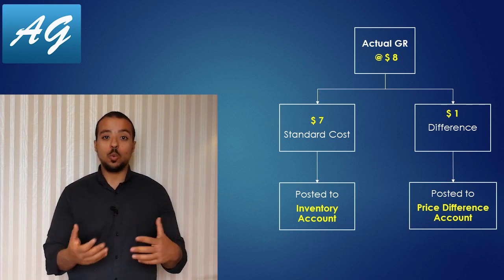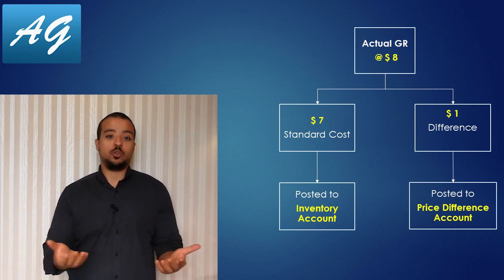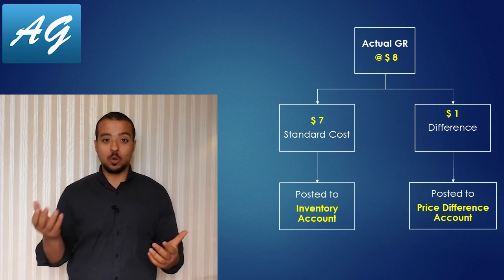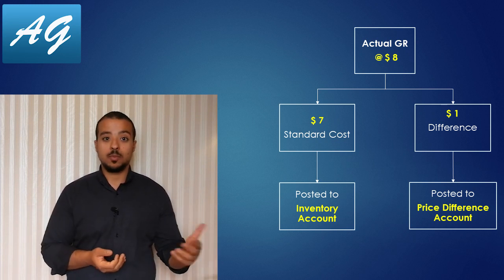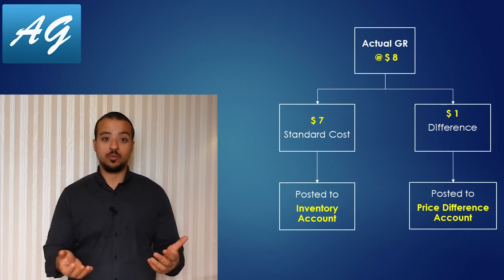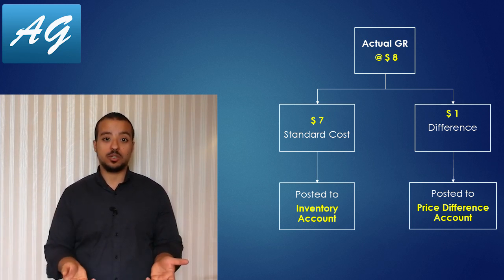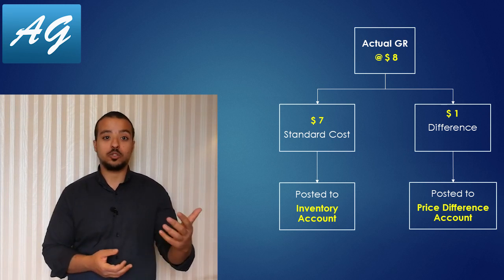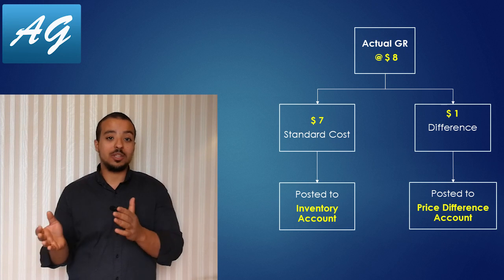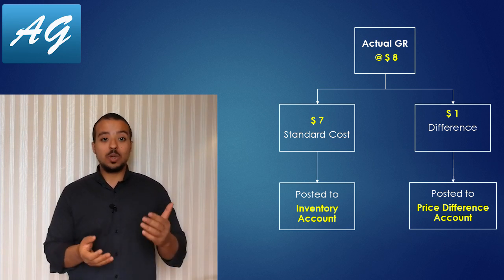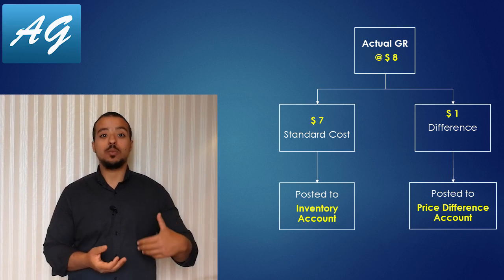We can know why we had to pay more or less for this product. For example, our plan was that the cost of the chair was 7 USD, but actually the supplier was more expensive. Or maybe the transportation to move the products from the supplier to our warehouse was more expensive, or maybe we had to pay more customs or duties or any other expense to make the chair ready to be sold. This way you can easily analyze why we have differences, and this will help you improve your performance.